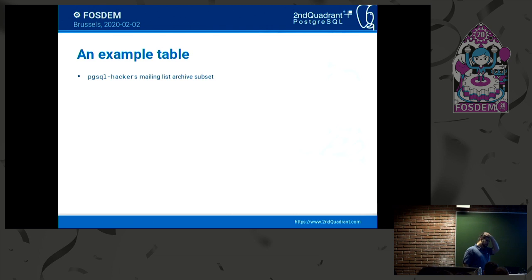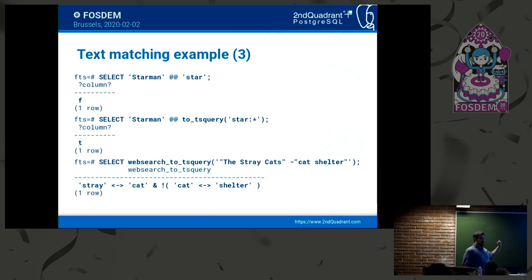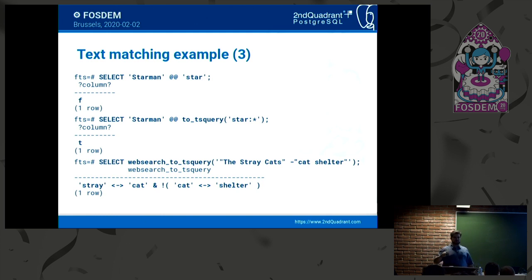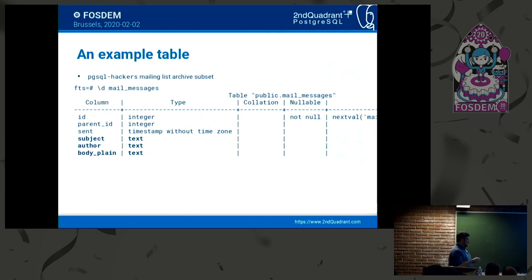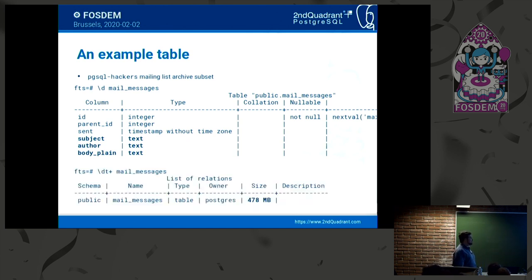The followed-by operator means immediately followed by. But if instead of the minus sign in the middle of the operator you insert a two or a three, that means two tokens away or three tokens away — so you can define the distance that you want. Let's use an example table of the contents of pgsql-hackers, the mailing list. The contents have an ID, a parent ID (which email you replied to), a sent timestamp. What we're interested in here is the subject, the author, and the body of the email in plain text. So how big is this? This is 478 megabytes.